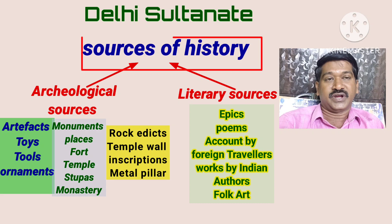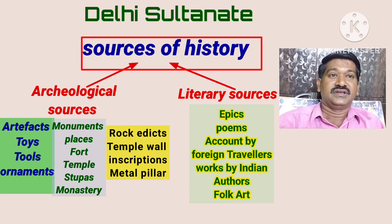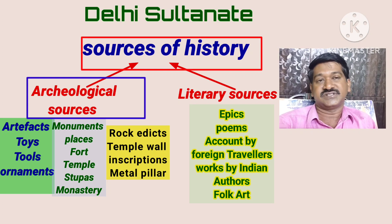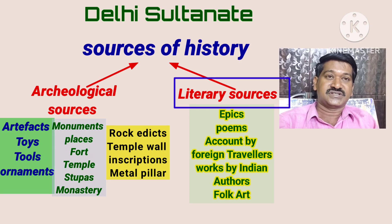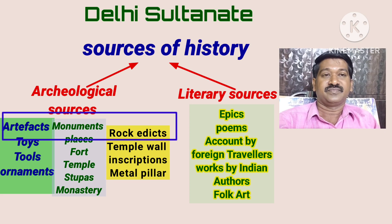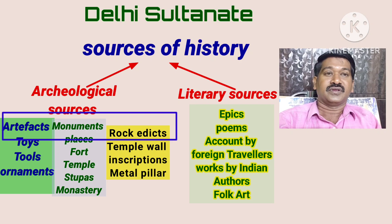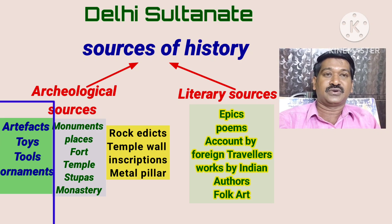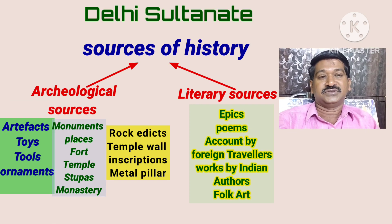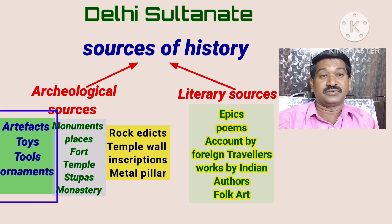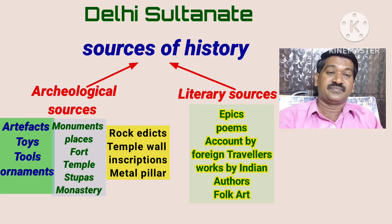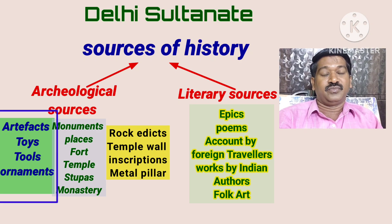What type of sources are there to write history? On those days, there are two types of sources to write history. The first one is the archaeological sources and the second one is the literary sources. In archaeological sources, there are three types: artifacts, monuments, and rock edicts. Artifacts means they used toys, tools, ornaments. Which type of ornaments they used, which type of tools and toys they used on those days — by studying these, they wrote the history.